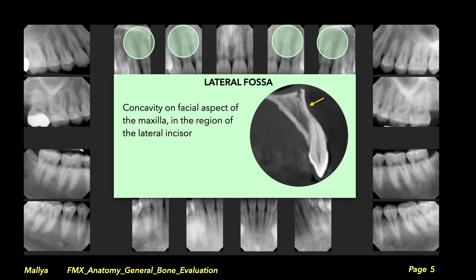The first anatomic radiolucency is the lateral fossa, located in the maxilla in the region of the maxillary lateral incisor. As you will note from the CT scan, there is a depression or concavity on the buccal surface, resulting in a decreased thickness of bone, making the bone around the lateral incisor look relatively more radiolucent. The radiolucency is diffuse in nature and you can still appreciate a trabecular pattern through the radiolucent area.